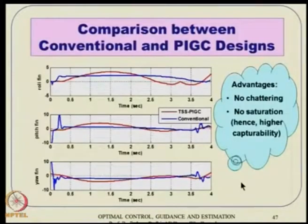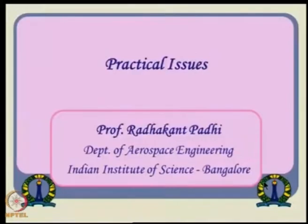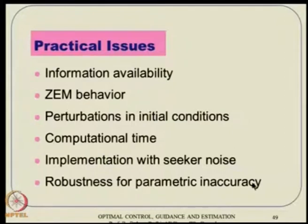Comparison between conventional and PIGC designs in terms of fin deflection: momentary deflections in conventional design are quite large, while the partial IGC (red line) is smooth and small everywhere — essentially no chattering, no saturation, giving higher capability. Now coming to practical issues: information availability, receiving so much feedback — is it available? Then there are ZEM (zero effort miss) behavior issues, perturbation in initial conditions, computational time issues, implementation with seeker noise, and robustness with parameter inaccuracy.